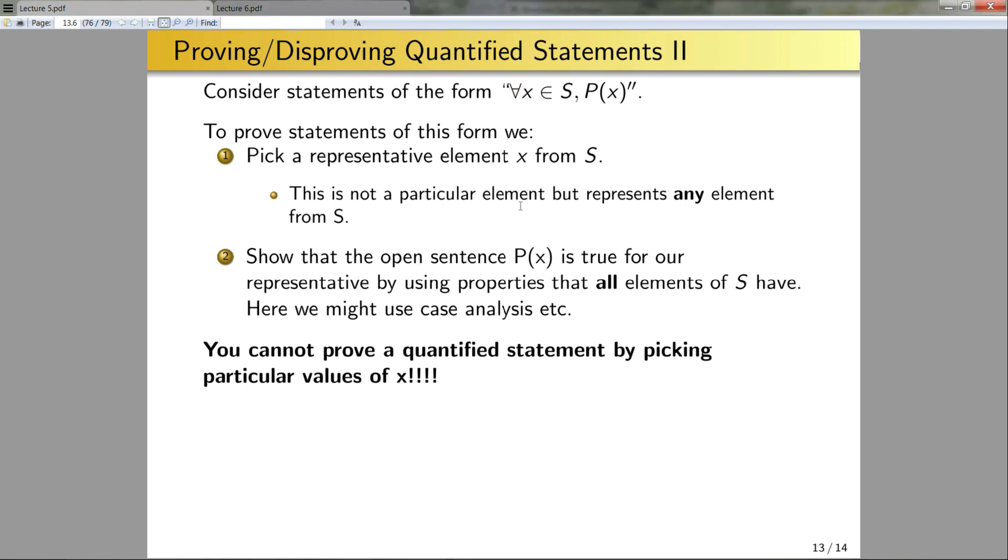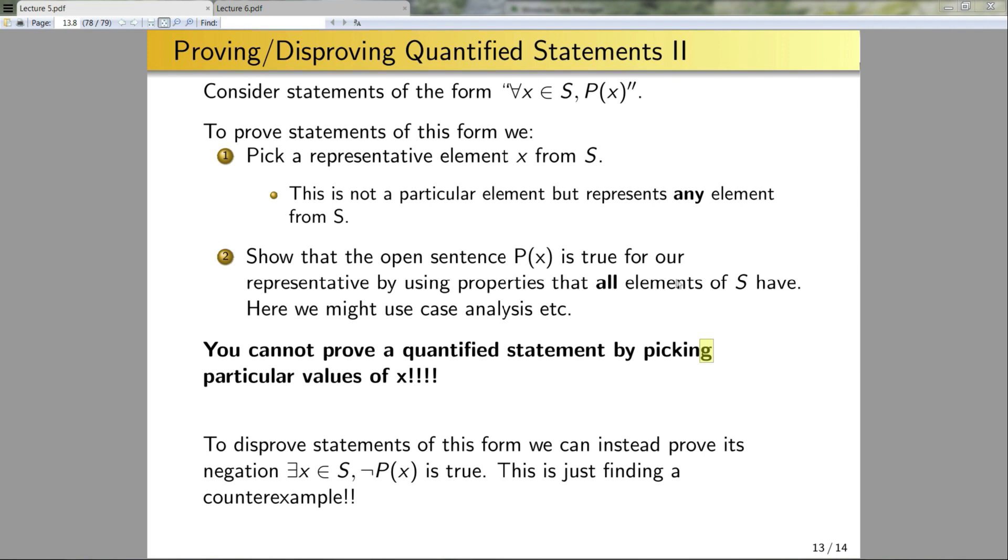Okay, so the next question I could ask is how do I disprove statements of this form? Well, similar to on the previous slide, I proved the negation. So to disprove statements of this form, I instead prove that there exists an x in s such that not p of x is true. Now, this has a name. This is just finding a counterexample. So again, we did that previously. Okay, so these last two slides don't really introduce anything fundamentally new. But when you are working on trying to prove or disprove a quantified statement, do keep both of these slides in mind, because it gives you the general idea of what you really need to do to prove the statement.